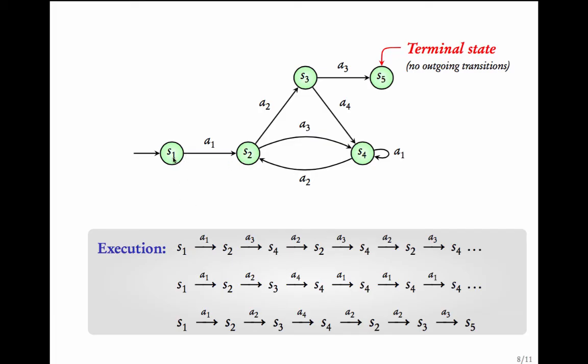So, one of this execution represents the behaviour that starts from S1 goes to S2 then keeps looping around between S2 and S4. The second execution is S1, S2, S3, S4, S4, S4 and so on. This execution represents the behaviour that starts at S1 goes to S2 goes to S3 then comes to S4 and keeps looping in S4.